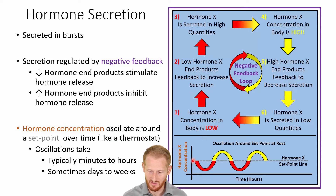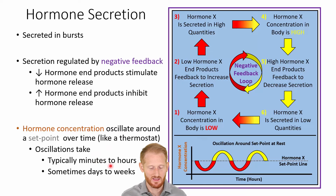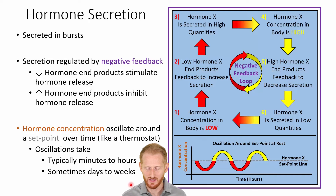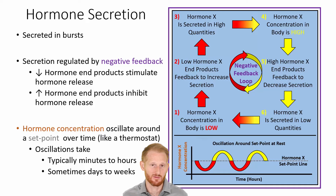This is a constant circular cycle causing oscillations in hormone levels — low hormone, high hormone, low hormone, high hormone. Most hormones oscillate on the order of minutes to hours, though some oscillate over days to weeks. Regardless of the timescale, think of it like a house thermostat: when it's too cold, it ramps up; if it's too hot, it shuts off until the heat dissipates and it becomes cold again, then it ramps back up.